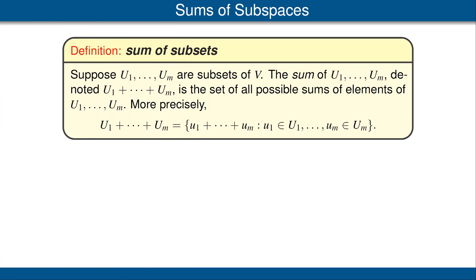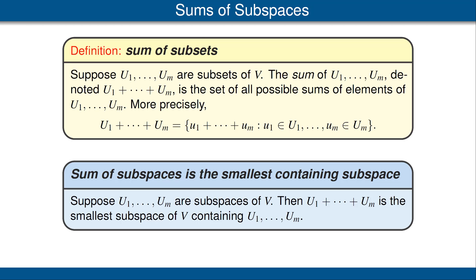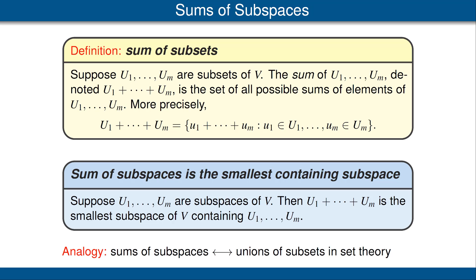Now we need to define the notion of the sum of a finite collection of subsets of V. Suppose we have subsets U₁, U₂, up to U_m of V. We define their sum to be all elements of the form something in U₁ plus something in U₂, and so on, up to something in U_m. Although we have defined the sum of arbitrary subsets of V, usually we are interested only in taking the sum of subspaces of V. The sum of subspaces U₁ through U_m is the smallest subspace of V that contains each of them. There's a good analogy between sum of subspaces and unions of subsets in set theory: the union of two sets is the smallest set containing both, and similarly the sum of two subspaces is the smallest subspace containing both.